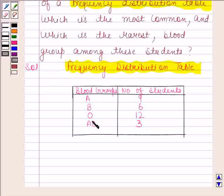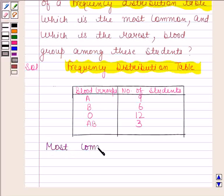Now from this table we will find which blood group is the most common. 12 students have O blood group, so this means most common blood group is O.